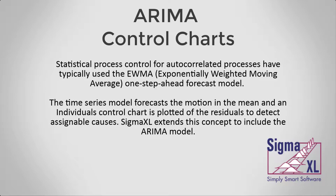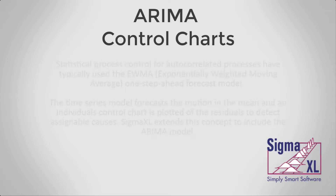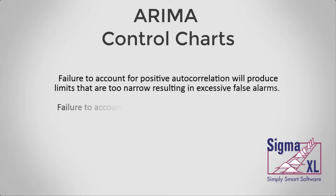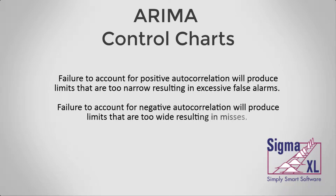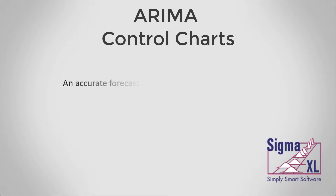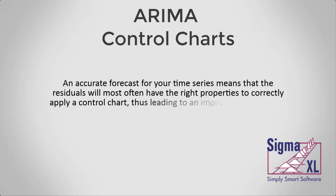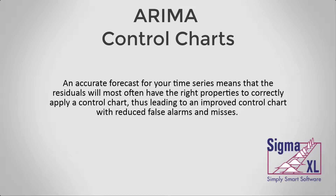Sigma Excel extends this concept to include the ARIMA model. Failure to account for positive autocorrelation will produce limits that are too narrow, resulting in excessive false alarms. Failure to account for negative autocorrelation will produce limits that are too wide, resulting in misses. An accurate forecast for your time series means that the residuals will most often have the right properties to correctly apply a control chart, leading to an improved control chart with reduced false alarms and misses.